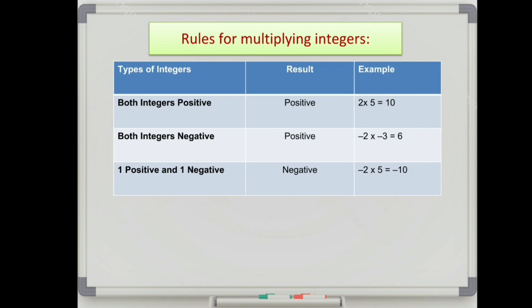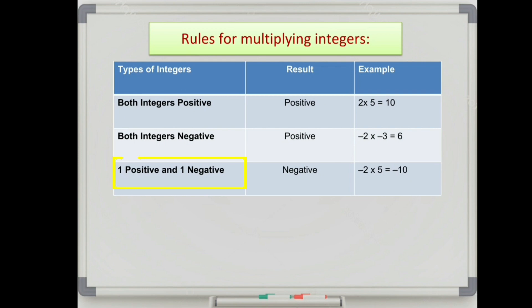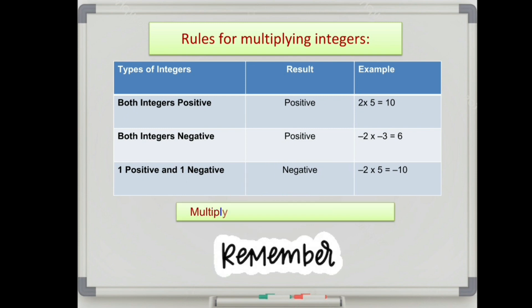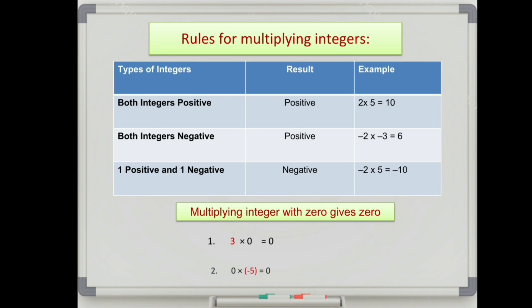The following table will help you remember the rules for multiplying integers: when both integers are positive, the result is positive; when both integers are negative, the result is positive; when one is positive and one is negative, the result is negative. Remember: always multiplying any integer with 0 gives 0.